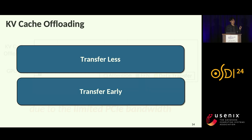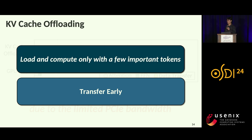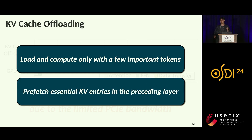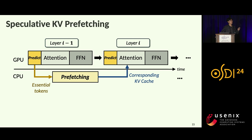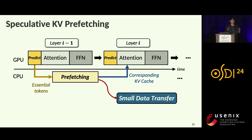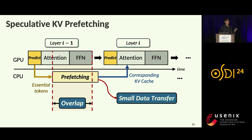To mitigate data transfer overhead, we take two approaches: transfer less and transfer early. Specifically, we load and compute with only a few important tokens instead of bringing the entire KV cache. We also prefetch the essential tokens from the KV cache in the preceding layer to overlap data transfer with computation. In each layer, we predict the essential tokens and prefetch the corresponding KV cache for the next layer. This makes the data transfer overhead significantly small and the attention computation of the next layer much lighter.